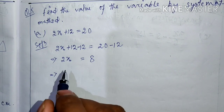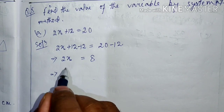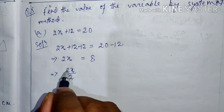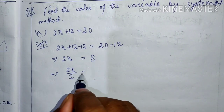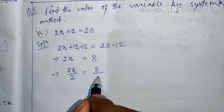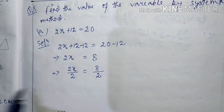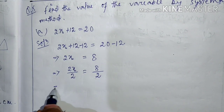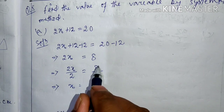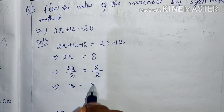Now we have 2x = 8. We need to find the value of x. In front of x there is a 2, so to remove it, we divide both sides by the same number 2. Two and two cancel, x is left. 8 divided by 2 is 4. So the answer is x = 4.